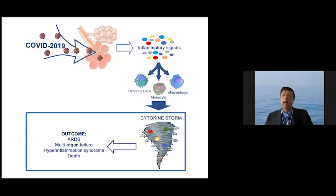So when we come back to SARS-CoV-2, we find that the virus comes to the lung. It causes a lot of inflammatory signals. These stimulate the cells to produce more cytokine, and there is a cytokine storm, which ultimately results in multi-organ failure, respiratory distress, and hyperinflammatory syndrome.